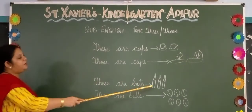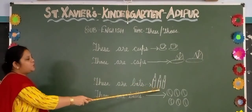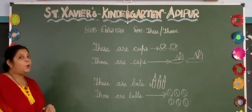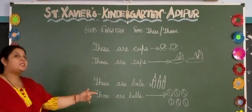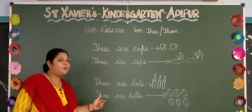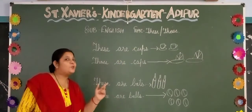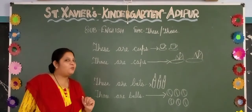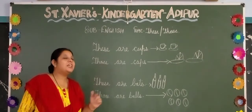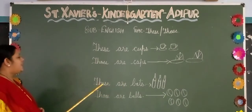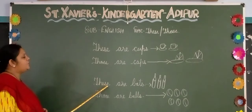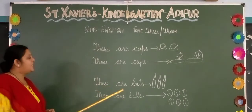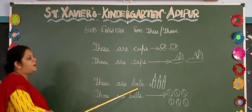How many caps are there? One, two, three. But the caps are near — those objects are near. So if the objects are near, what will we say? 'These.' T-H-E-S-E. These are caps.